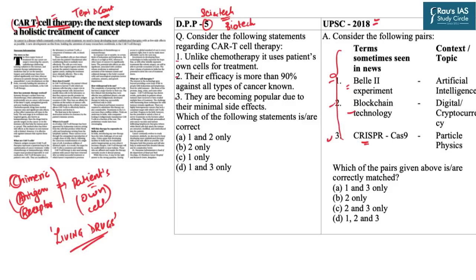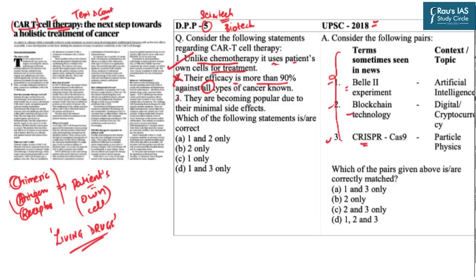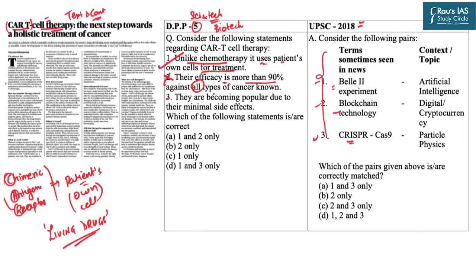Today's question has three statements. Statement one: unlike chemotherapy, CAR-T cell therapy uses the patient's own cells for treatment — correct. Statement two: their efficacy is more than 90% against all types of cancer — incorrect, because CAR-T cell therapy has been approved for leukemia and lymphomas, and the 90% efficacy is seen only in those cancers, not all types. Statement three: they are becoming popular due to their minimal side effects — also incorrect, as they have a high range of side effects. Therefore, option C — one only — is the correct answer for the DPP question. The answer to the previous year question is option B — two only.